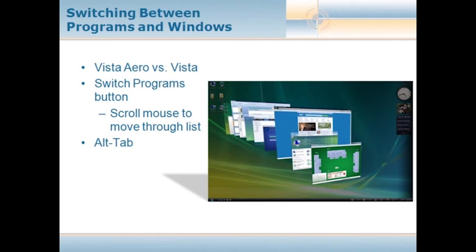We also have a switch programs button. If you're running Aero and glass effects, you'll see all windows cascading where you can scroll through them with your mouse scroll wheel — and these aren't static images, so if you're viewing a video it'll actually be running in the window. Just scroll through and click to select whichever one you want. If you don't have the Aero experience, it looks similar to alt+tab — a toolbar listing all programs and windows you can pick from.